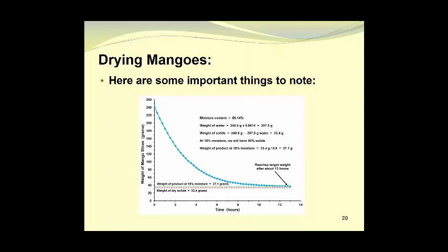At a target moisture of 10%, we will have 90% solids. So the weight of the product at 10% moisture will be equal to 33.4 grams of solids divided by 0.9, which is equal to 37.1 grams. This last value, as well as the weight of the solids, enabled us to draw two lines on the graph. One for the weight of dry solids, which was 33.4 grams, and the other one for the weight of the product at 10% moisture, which is 37.1 grams. And here you can see how the weight of the mangoes during the drying process approached the weight of the dry solids, that being 33.4 grams, which it would reach at approximately 14 hours.